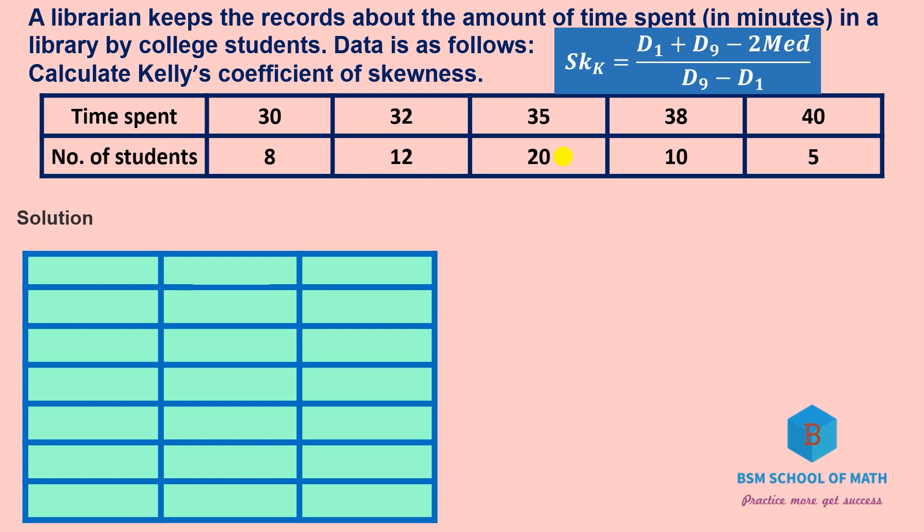In deciles, how do we use median and quartile? We use cumulative frequency (CF). First, we have X as time spent, F as number of students, and CF as cumulative frequency. We add the frequencies: 8, 12, 20, 10, 5. N equals 55.